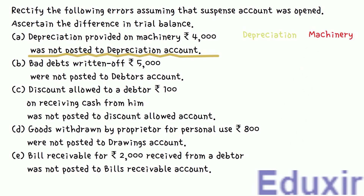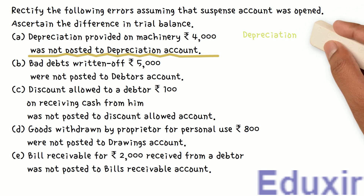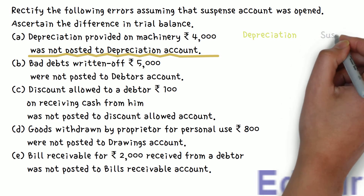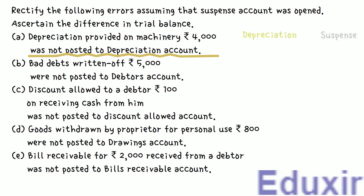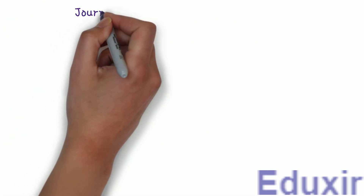At the same time, as the machinery is depreciated, the worth of the machinery will be decreasing, so we should credit the Machinery Account with 4000 rupees. In this case, this transaction was not posted to the Depreciation Account, which implies it was posted to the Machinery Account. So we don't have to bother about the Machinery Account. To rectify this error, we need to post 4000 rupees into the Depreciation Account. As this is a one-sided error, the other account that should be credited is the Suspense Account.